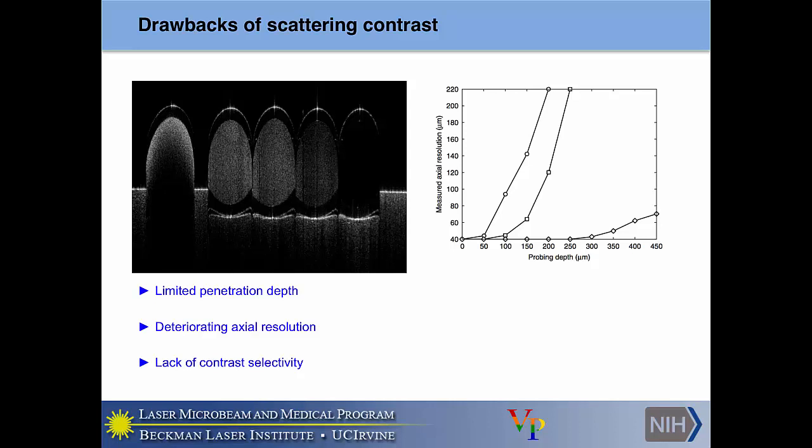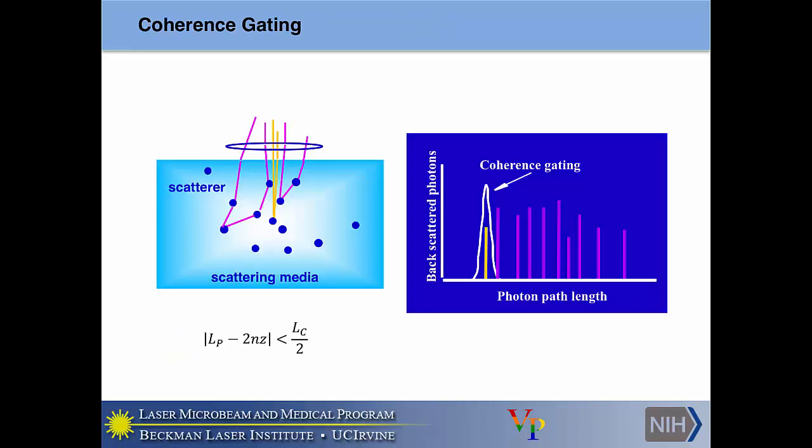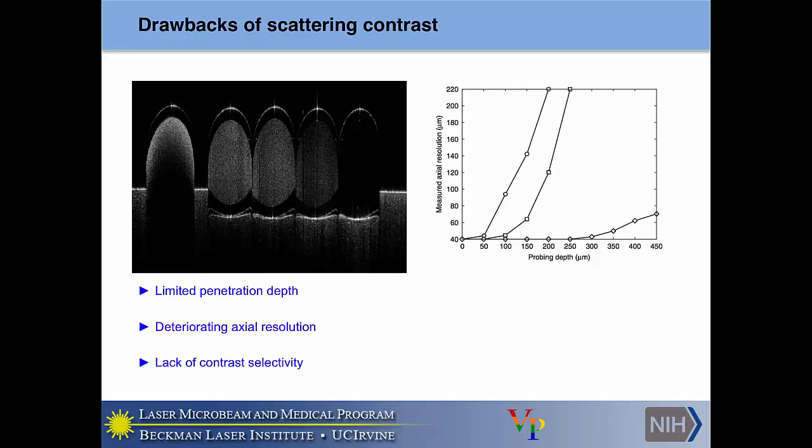Additionally, multiple scattering events reduce actual resolution because they interfere with delayed photons that were supposed to interrogate different depths. This is shown in Monte Carlo simulations by Dr. Ruikang Wang at the University of Washington. The circle line shows measured axial resolution as a function of probing depth for an isotropic scatterer with a G-factor of about 0.7. G-factor is basically a measure of how forward-scattering or how backward-scattering the tissue is.